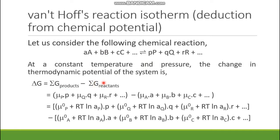The summation of free energy of products and reactants is expressed as the chemical potential multiplied by the respective number of moles. So for product P, it is μP times its stoichiometric coefficient p. Similarly for Q, and for reactant A it is μA times stoichiometric coefficient a, and so on.